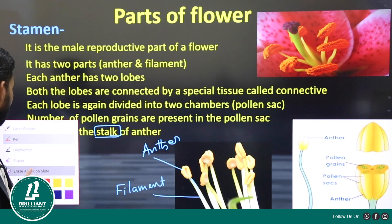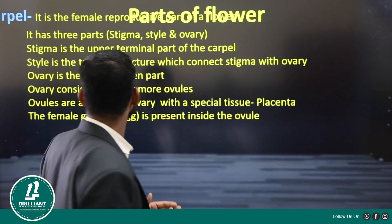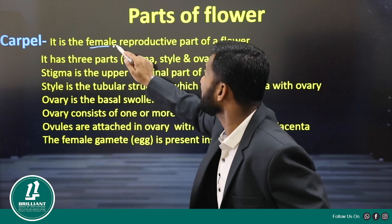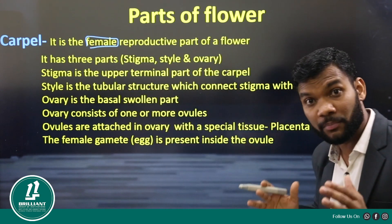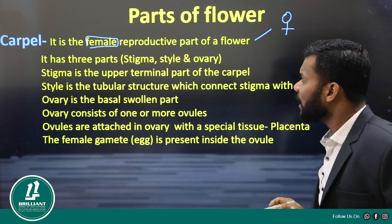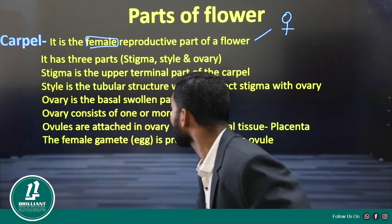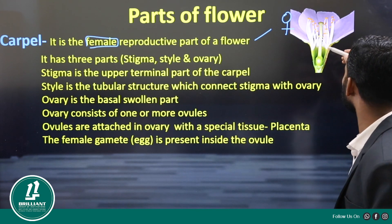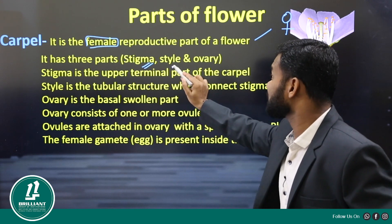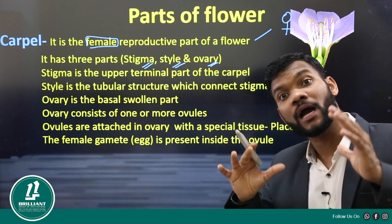Now let us see what is the carpel. Carpel is the female reproductive part of a flower, and it has three different parts: stigma, style, and ovary. All these three together we call the carpel.